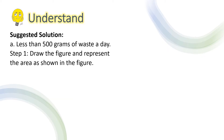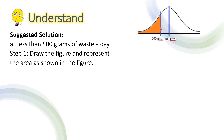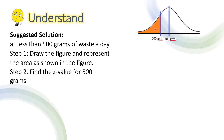Here is our suggested solution. For letter A, we are solving for the probability that a person selected at random generates less than 500 grams of waste a day. For step 1, we draw the figure and represent the area as shown. Since 500 is less than 700, then 500 is to the left of the mean and the area to the left of 500 is shaded. For step 2, find the z-value for 500 grams: z = (500 − 700) / 155 = −1.29. This means that 500 grams is 1.29 standard deviations below the mean of 700 grams.